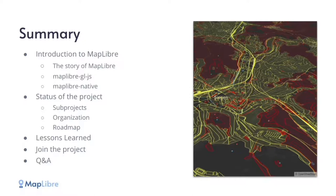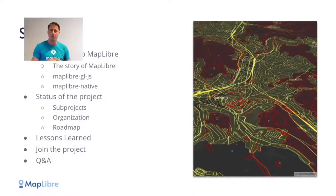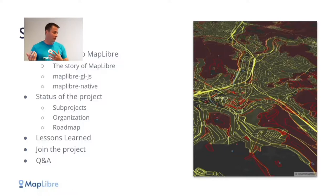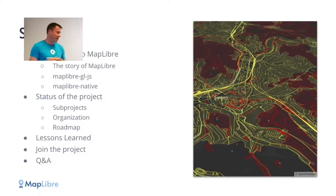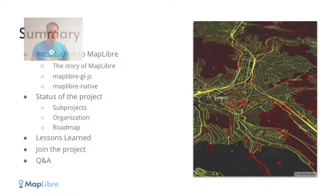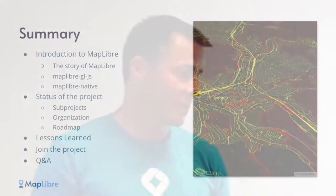Summary: We have learned what MapLibre is. You have heard the story behind the project, learned a bit how the project is set up and governed, and who are the people behind it. There are different sub-projects as well, such as the React bindings and others, and the Leaflet library using MapLibre. There is a roadmap and a couple of things discussed on how to join the project and how to contribute. I'm really keen to hear your questions. Thank you very much.